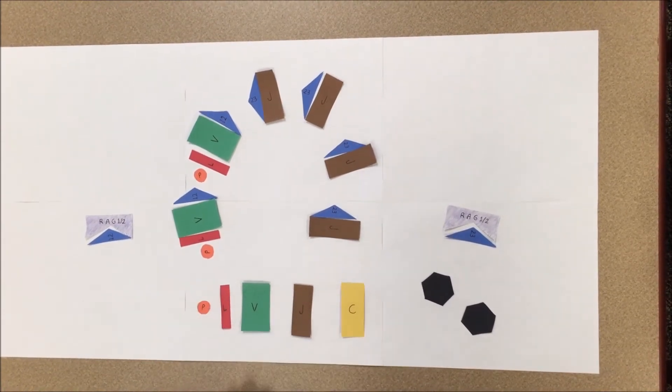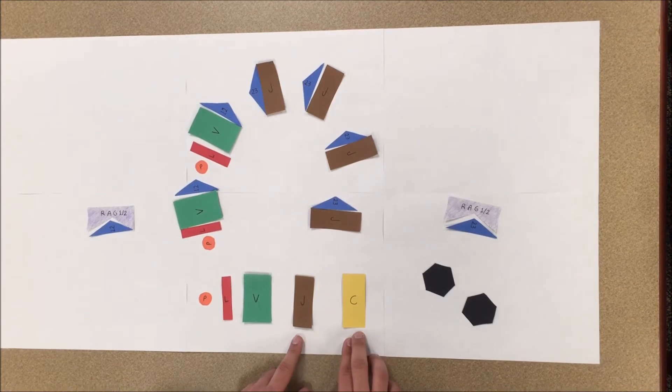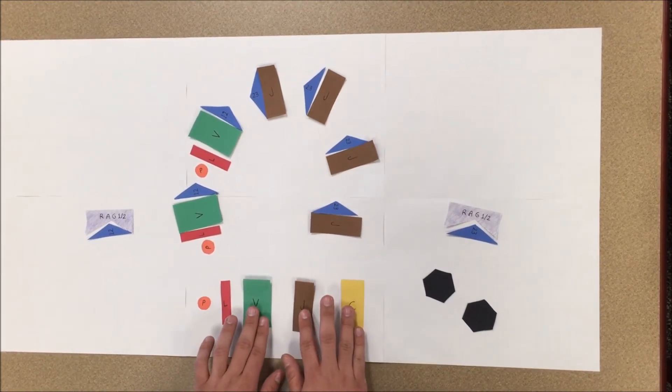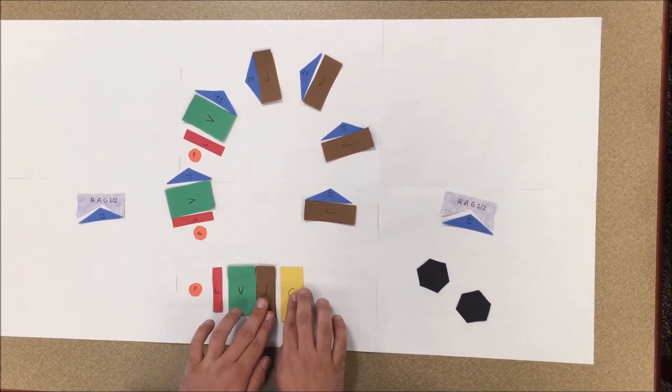Finally, we are left with the variable, joining, and constant regions. These regions are ligated to form a light kappa chain.